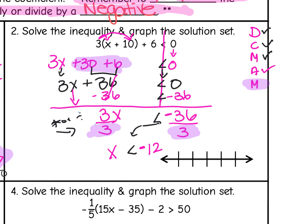Let's graph this solution set. I put negative 12 in the middle, with negative 11 and negative 10 going up and negative 13 and negative 14 going down. Because this is just less than — not less than or equal to — I graph it with an open circle. X is less than negative 12, so any number heading to the left on the number line is part of the solution set. You can always test it by choosing a test point — I like to use 0.